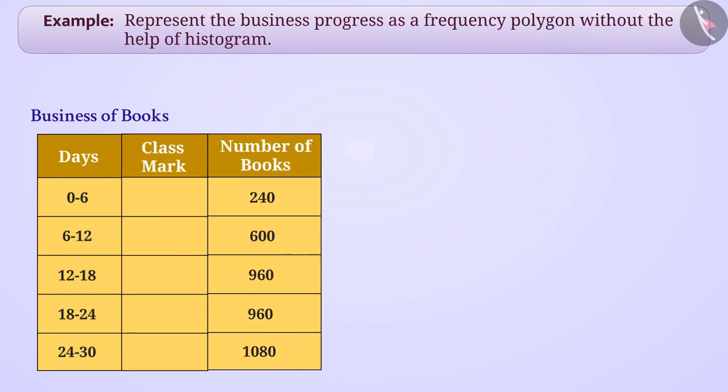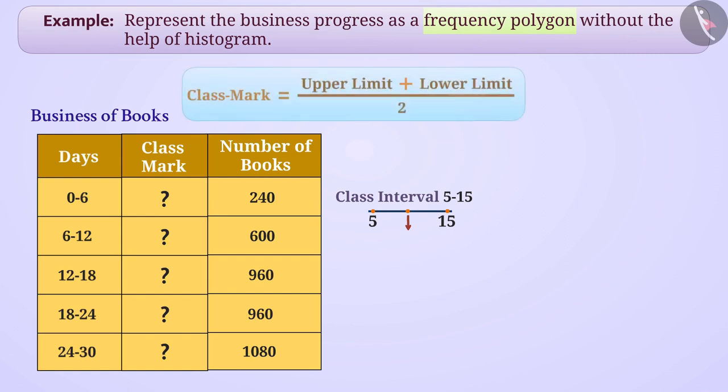We need class marks to create a frequency polygon independently. We know that the midpoint of class interval is called a class mark. Can you tell how we find the class marks? Think. Absolutely right. To find the class mark of a class interval, we divide the sum of upper limit and the lower limit of class interval by 2. Like class mark of class interval 0 to 6 is 3. Similarly find the class mark of all the class intervals.